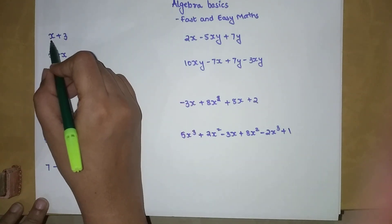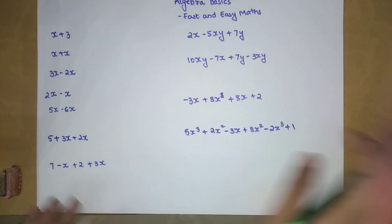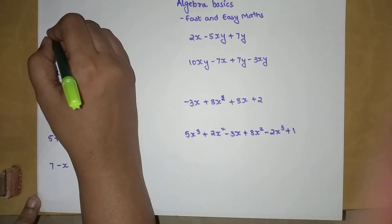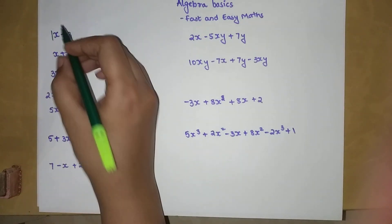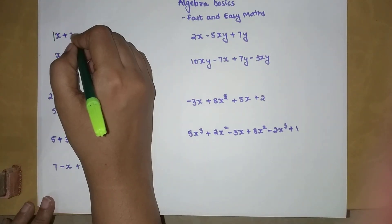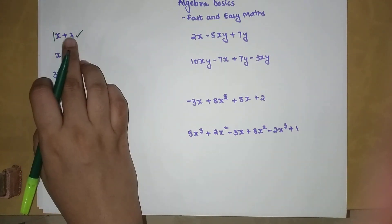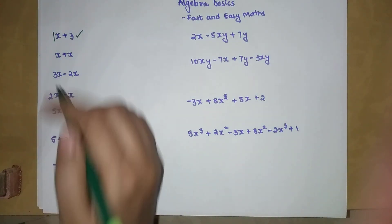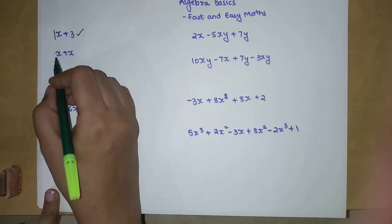So here, if you see 'x plus 3' — please understand, if x does not have any coefficient we are going to take it as 1x. Now if 3 also does not have anything related to x, we keep it as it is. If the question was 1x plus 3x, we would add 1 and 3, but since 3 here has no variable, it is a constant, and you cannot add 1 and 3.